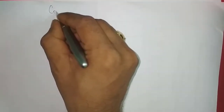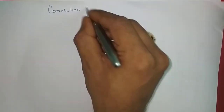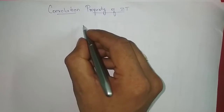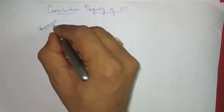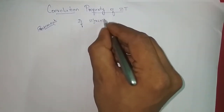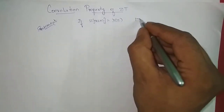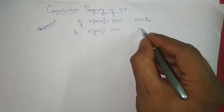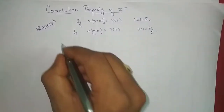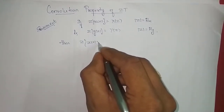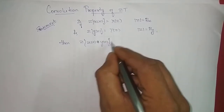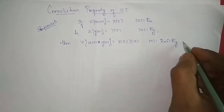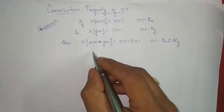Next we will prove the convolution property of Z-transform. Statement: if the Z-transform of x(n) is X(z) with ROC |z| = Rx, and the Z-transform of y(n) is Y(z) with ROC |z| = Ry, then the Z-transform of x(n) convolved with y(n) is equal to X(z) times Y(z), with ROC being the intersection of Rx and Ry. This is the statement we will now try to prove.